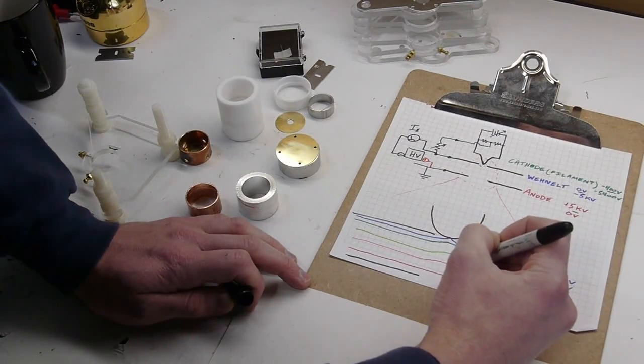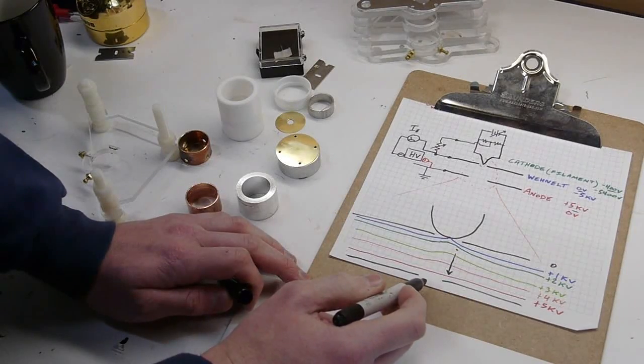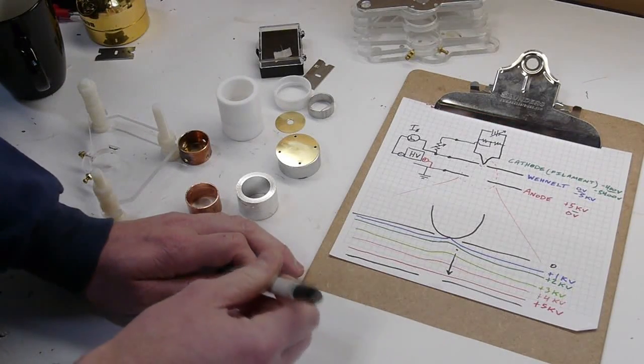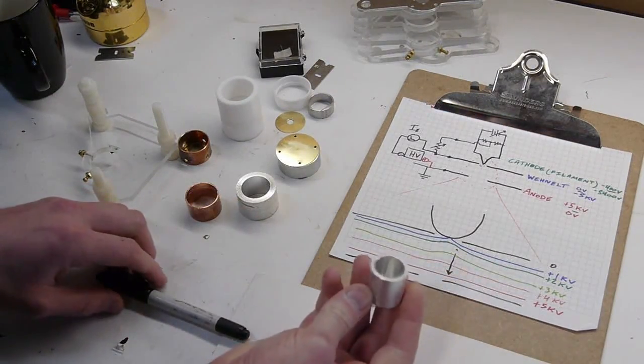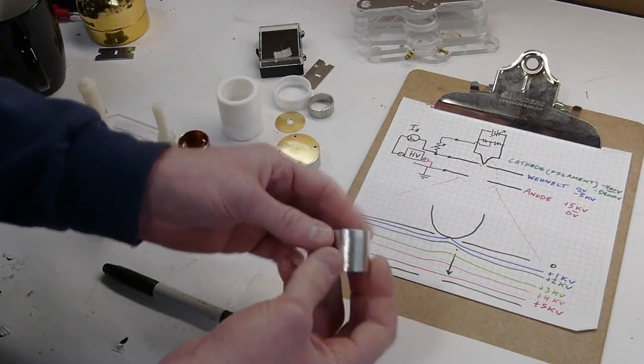So if you're an electron and you're sitting right here, you're experiencing a very high acceleration in the downward direction like this. But as soon as you go through the hole in the anode, there's no more field.